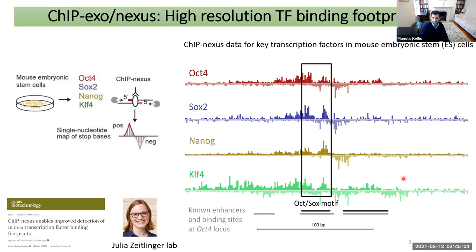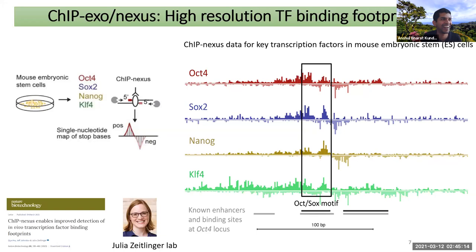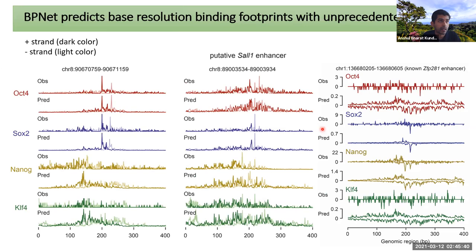The models are remarkably accurate — here are predictions for three enhancers in the genome showing Oct4, Sox2, Nanog, and Klf4. This is observed data versus predicted data on held-out chromosomes never seen before. The predictions are high-resolution and extremely accurate, capturing where footprints actually lie. In some cases, the data is noisy and the model effectively denoises it.